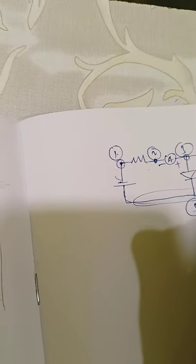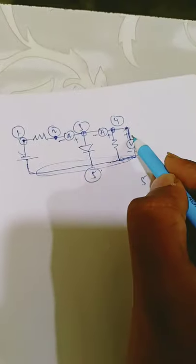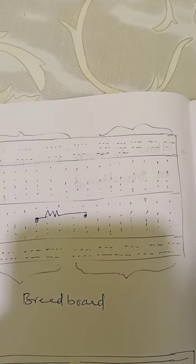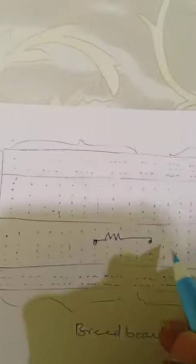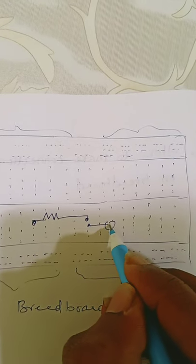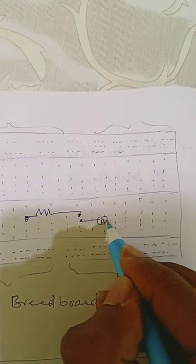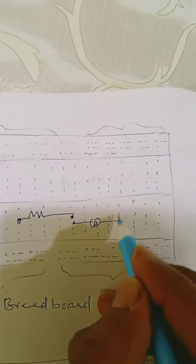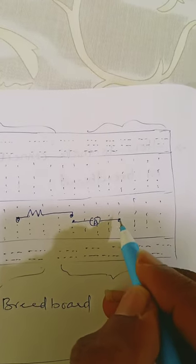Let's say the ammeter has a positive and negative terminal. The other side of the resistor and the negative side of the ammeter are connected at the same potential, so let's connect the ammeter there. I have connected the ammeter at a different potential node.